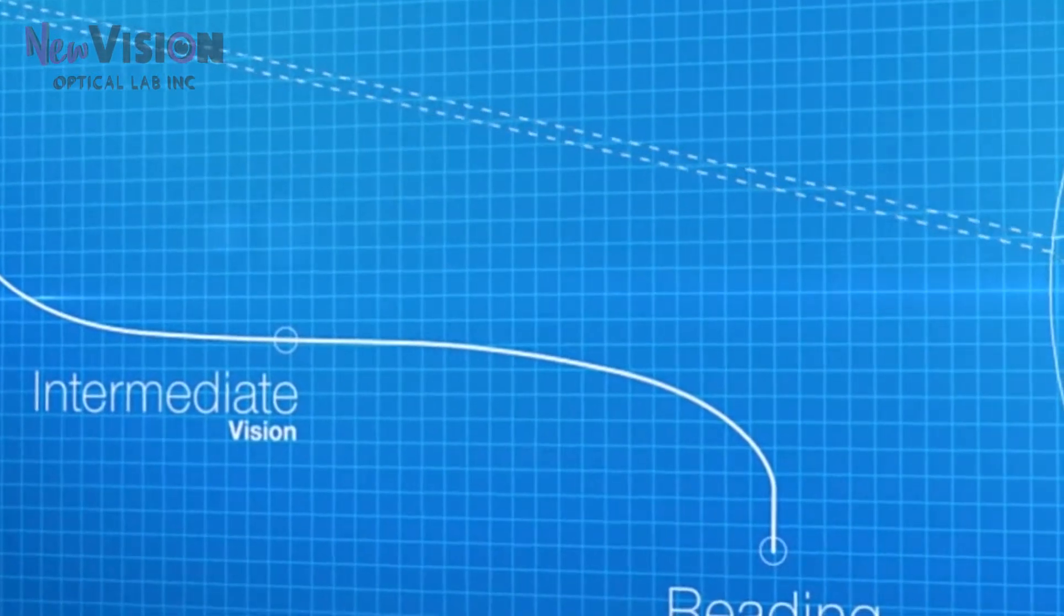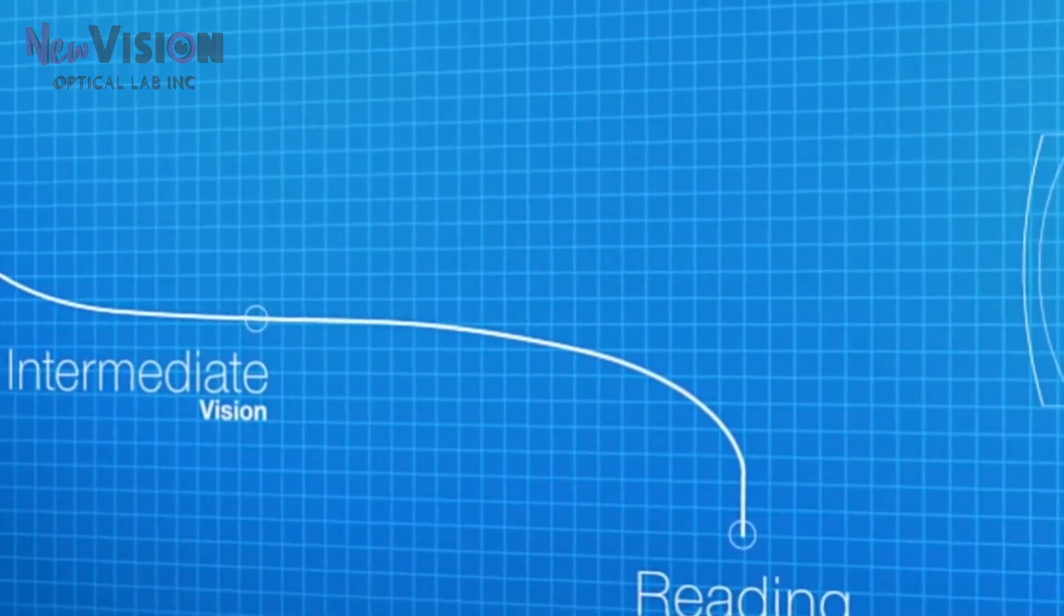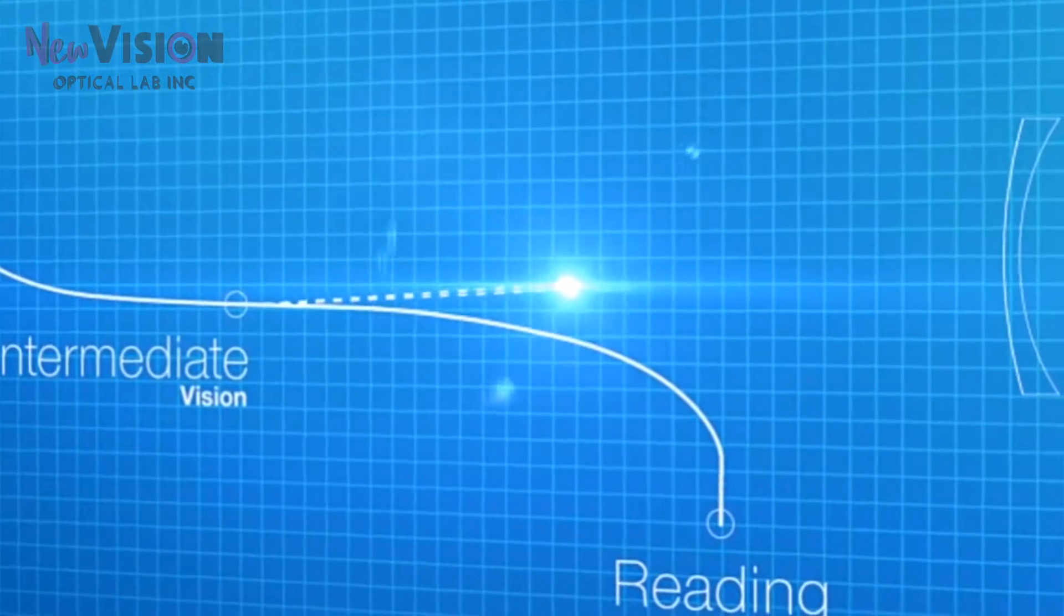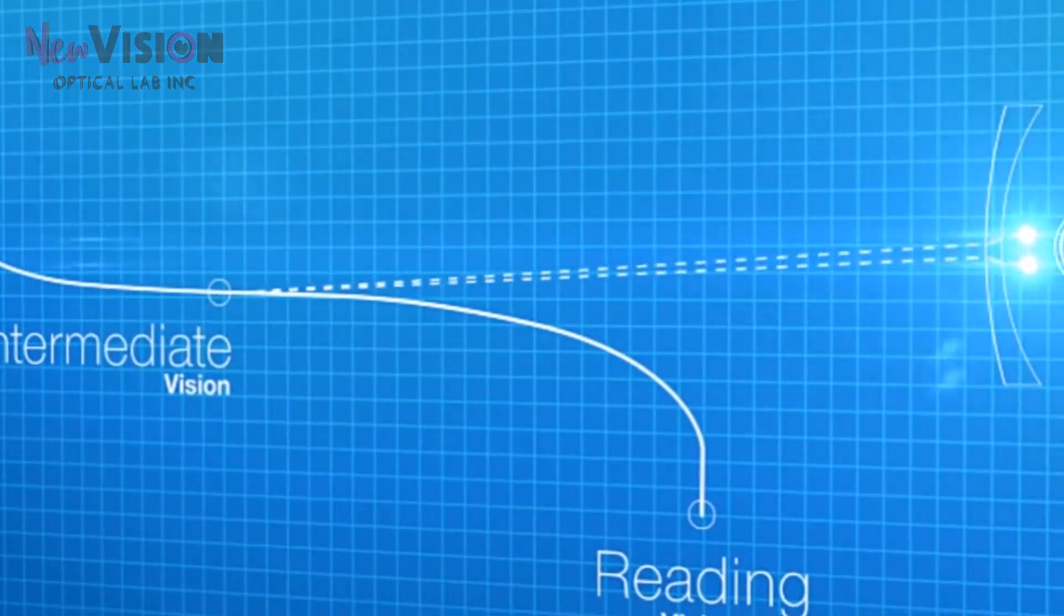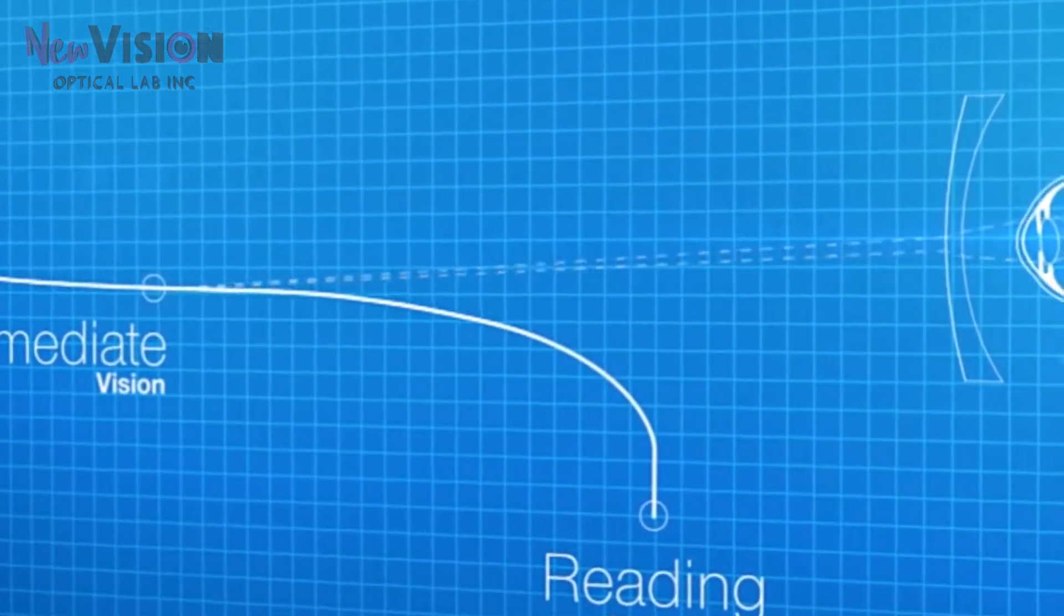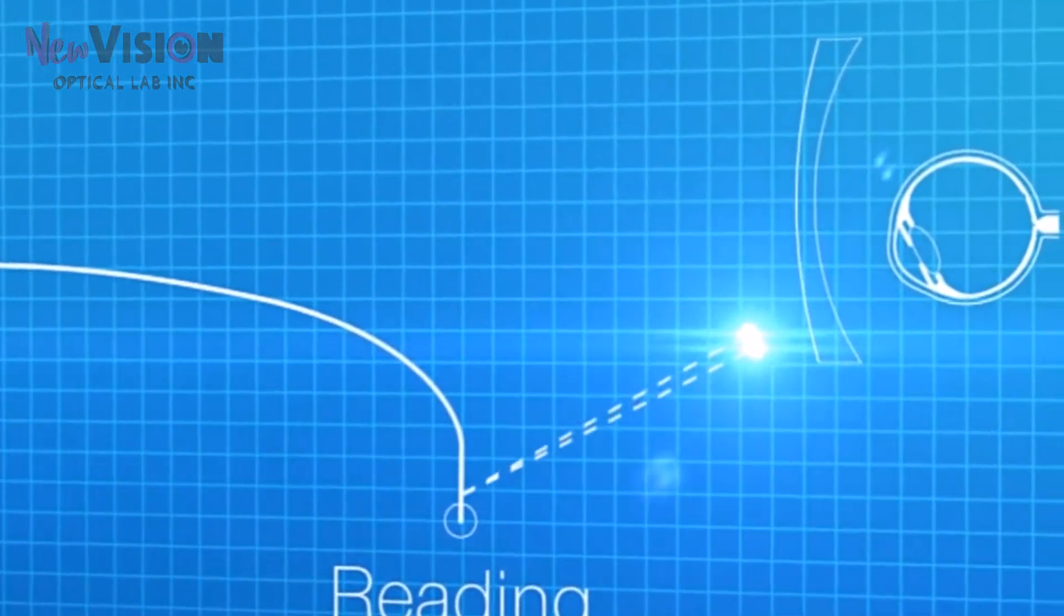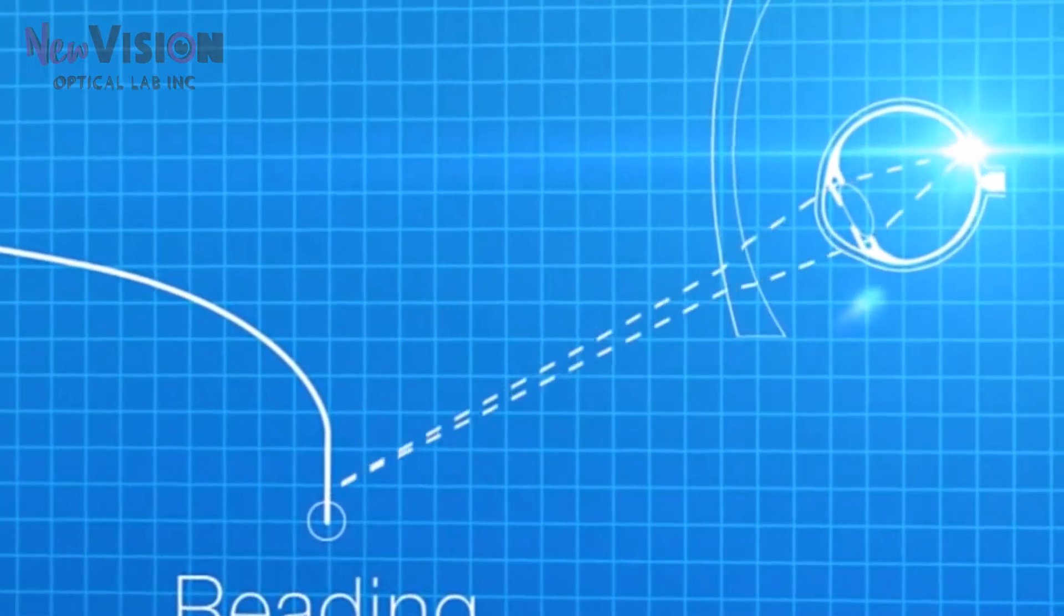In addition, the calculation takes into account the vertical movement of the eye and simulates the rays representing the intermediate vision. Finally, there is a simulation of rays from objects closest to the eye, the reading zone.